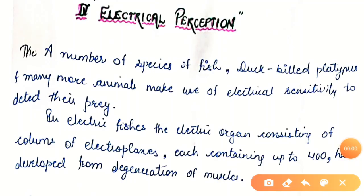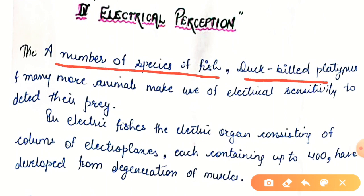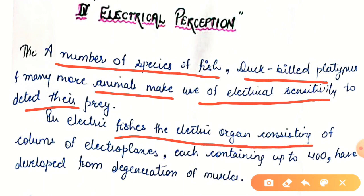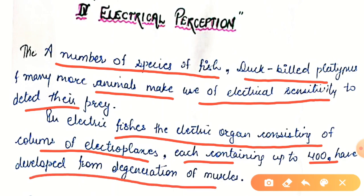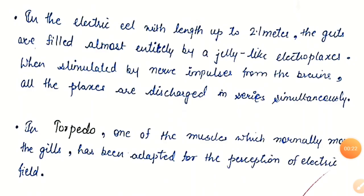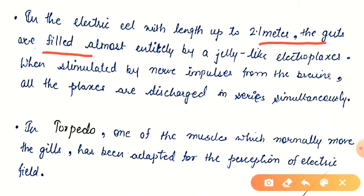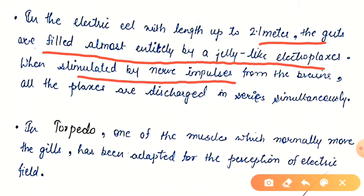Now we are seeing electrical perception. A number of species of fish, the duck-billed platypus, and many more animals make use of electrical sensitivity to detect their prey. In electric fishes, the electric organs consist of columns of electroplaques containing up to 400 and have developed from degeneration of muscles. In the electric eel — with a length up to 2.1 meters — the guts are filled almost entirely by a jelly-like electroplaque. When stimulated by nerve impulses from the brain, all the plaques are discharged in series simultaneously.